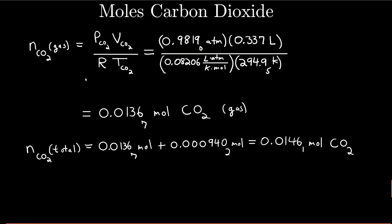Now we're going to calculate moles of carbon dioxide gas that were in the gas phase above the solution. This is the ideal gas law, PV = nRT, solved for n. Moles of carbon dioxide gas equals the pressure of carbon dioxide times the volume of carbon dioxide, over R times the temperature of carbon dioxide. This is why I converted the pressure of the carbon dioxide to atmospheres. There's the pressure in atmospheres; this is the volume in liters — I just moved the decimal three places to the left. That's the gas constant R, and this is the temperature of the carbon dioxide in Kelvin. Units all cancel, and now I know how many moles of carbon dioxide are in the gas phase.